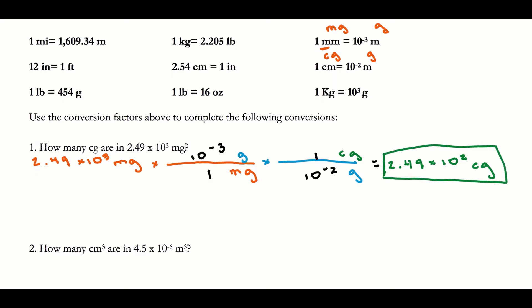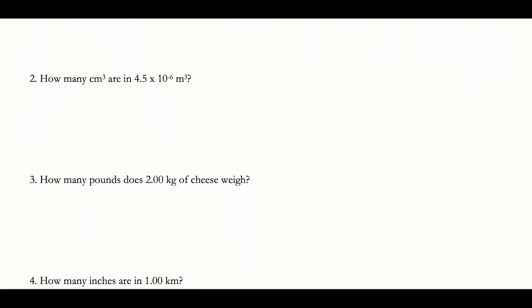Let's look at the next example: how many centimeters cubed are in 4.5 times 10 to the negative 6 meters cubed? My given is 4.5 times 10 to the negative 6 meters cubed. I want to get out of meters cubed by putting it on the bottom.